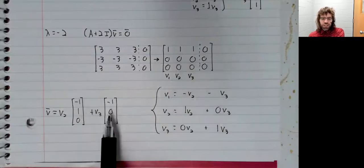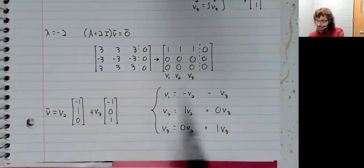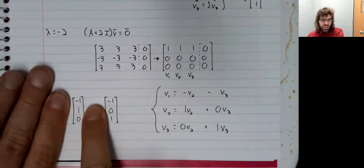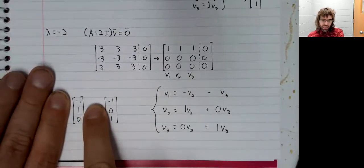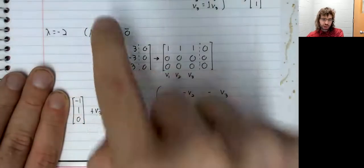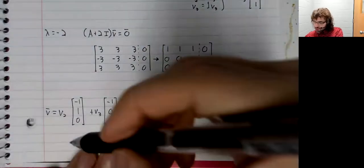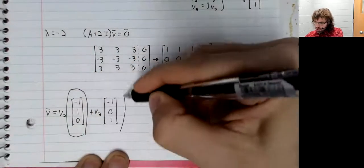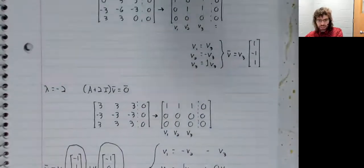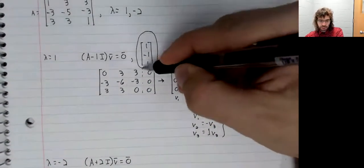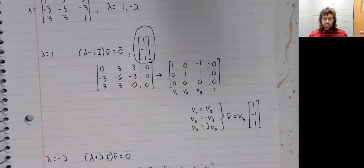We talked about this when we talked about null spaces. These vectors are a basis of the null space of A plus 2I. And as basis vectors, they must be linearly independent. So even though we only had two eigenvalues, we've gotten three linearly independent eigenvectors. And that's all we need for the diagonalization.